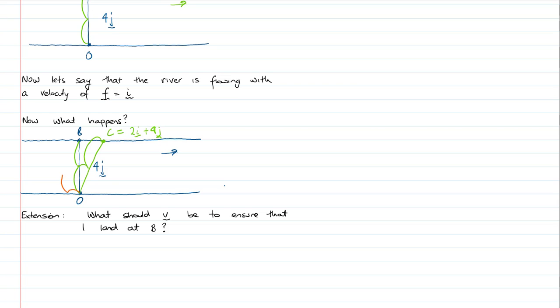So the extension will be, what should V be to ensure that I land at B? Now my V, my velocity, has to counteract my flow. So that means instead of travelling 2j, what I'm going to do is I'm going to travel -i plus 2j. So -i plus 2j will take me to there, but then the flow will take me to here. So V is equal to -i plus 2j, and that means that my resultant velocity is equal to my velocity plus the flow rate, which gives me my overall 2j, which is my desired velocity.